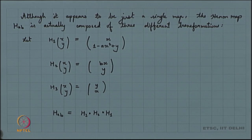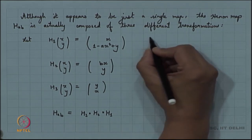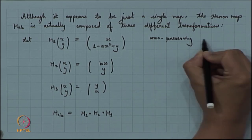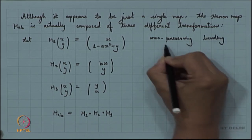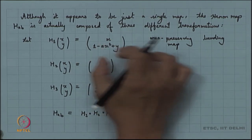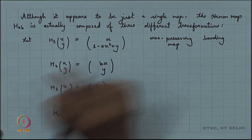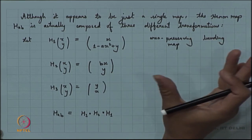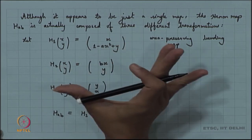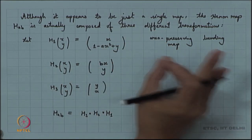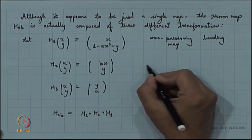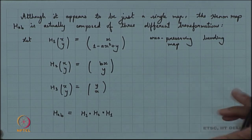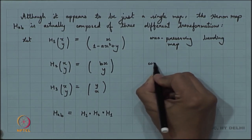What is h₁? It is an area-preserving bending map — area-preserving because of the structure, and bending due to the x² term, giving a parabolic action. What is h₂ doing? Since |b| < 1, h₂ is contracting in the x-direction — basically a contraction in x. And h₃ is just a rotation by angle π/2.